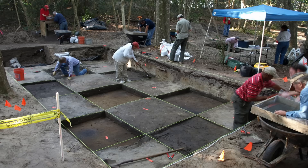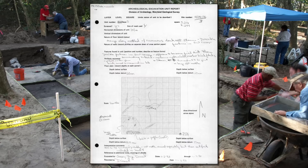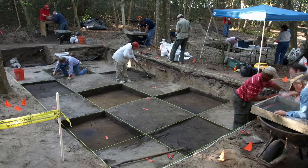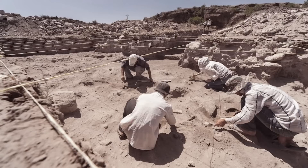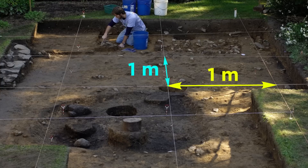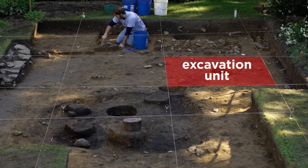Excavations are highly systematic and detailed, so that other archaeologists can look at excavation reports and perform analysis on them without having to physically be there. Setting up the systematic method of excavation at a site is critical before ground is broken. Archaeological sites are excavated using grids. Grid squares are 1 meter by 1 meter, and they are called excavation units.